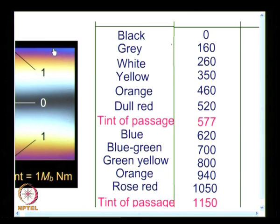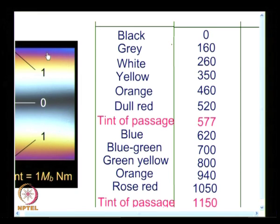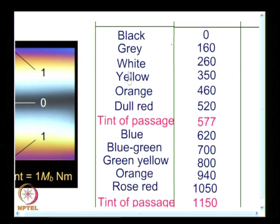Looking closely at the beam specimen, the top portion under compression and the bottom portion under tension show a slight color change due to the Poisson effect — visible as a thickness change. You cannot hide anything from experiment; experiment shows what actually happens, not your approximations. You see a dull red to blue transition at the tint of passage for fringe order 1.